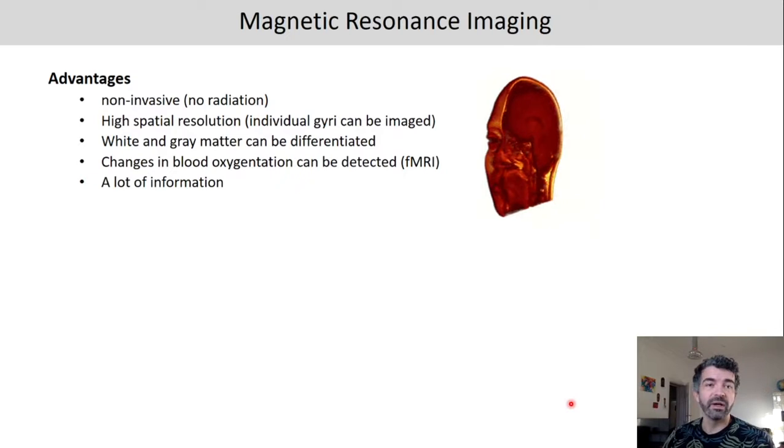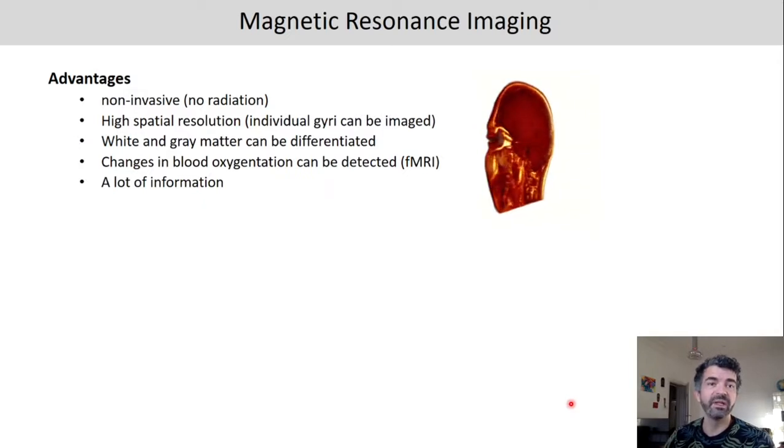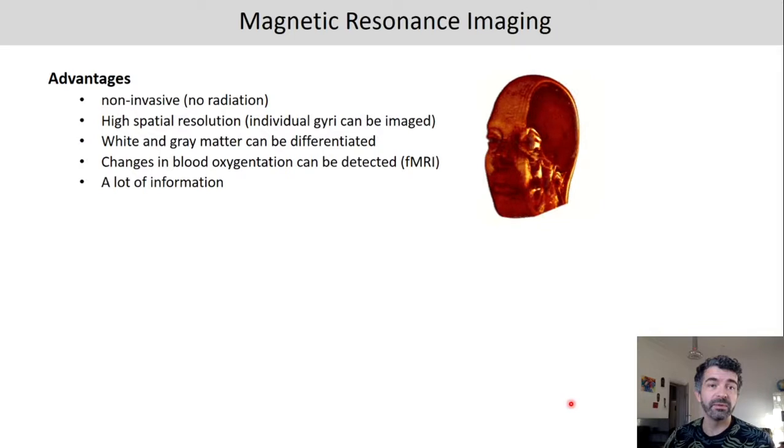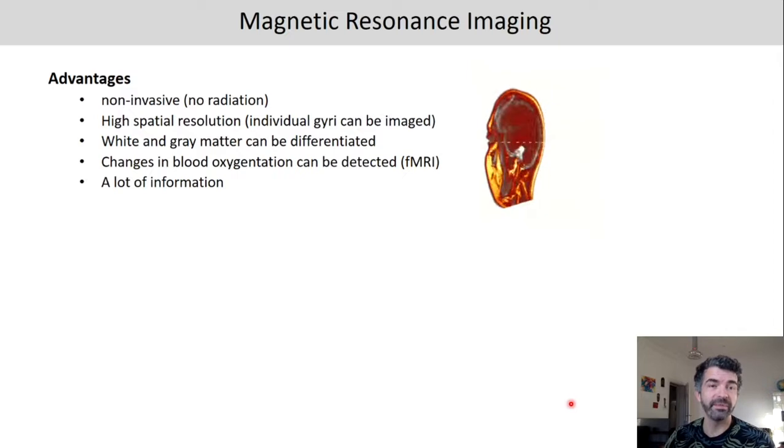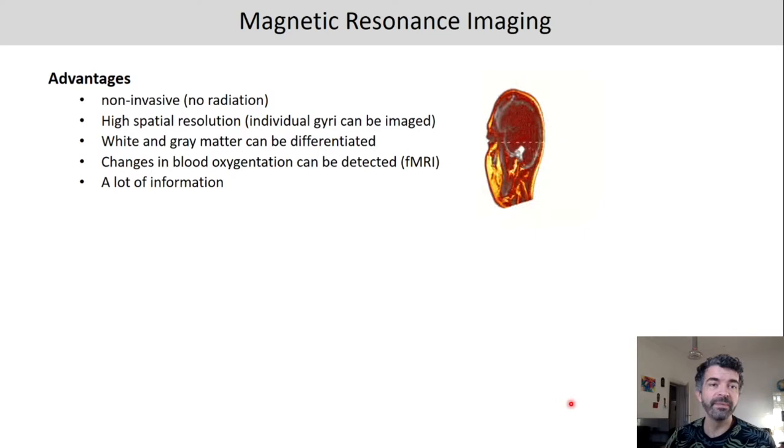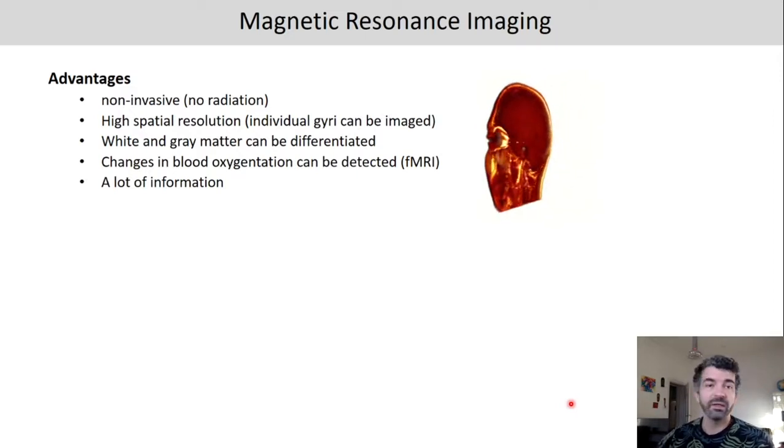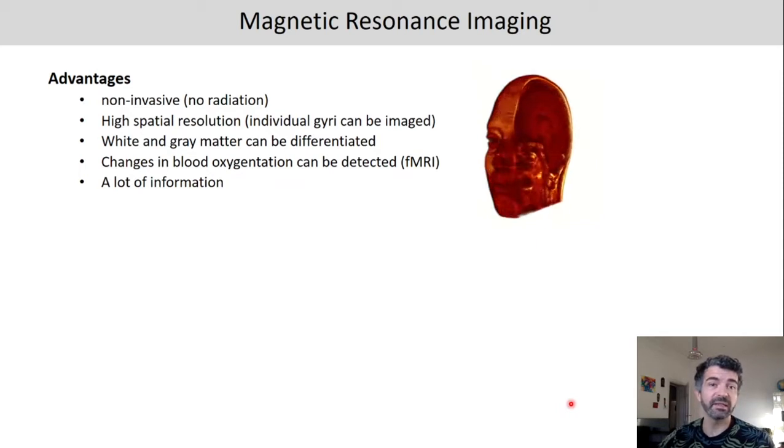The advantages of MRI are that it is non-invasive so we don't use radiation as in PET. We don't have to break skin as we would have to for single cell recordings for example. And as I said we have a very high spatial resolution which comes in handy if you want to image an individual gyrus. We can also differentiate between white and gray matter using MRI. We can measure changes in the blood oxygenation which is then used for fMRI. And MRI data has a lot of information. It's very complex data which can be very useful if you want to make a complex analysis.